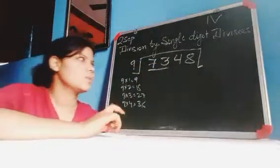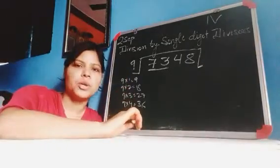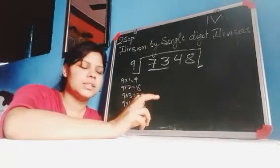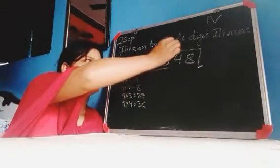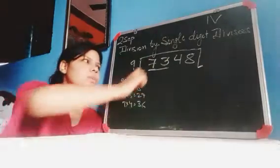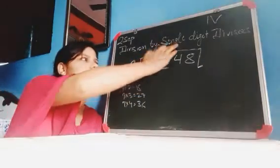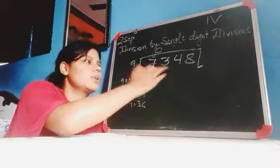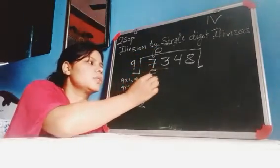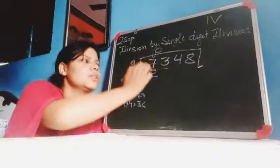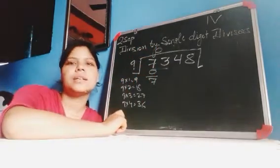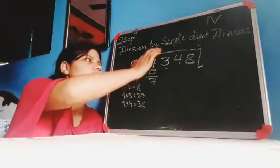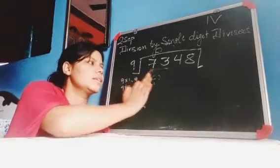Dear students, we don't apply 0 here. You know that in the middle if we write 2 digits, then we take 0. But we don't write 0 in the starting because there is no value of 0 in the starting.